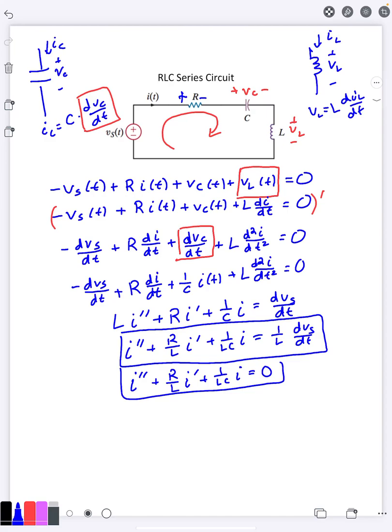If they ask you for the voltage across the inductor, well you could take the derivative of it and multiply it by L. And if they ask you the voltage across the capacitor, you have to integrate it and divide by C.